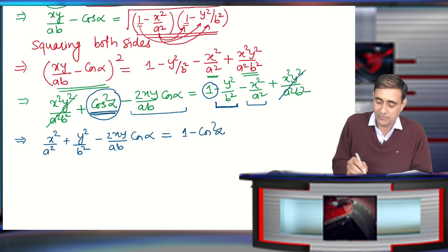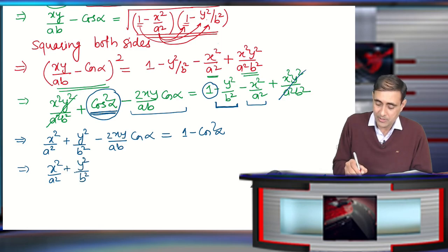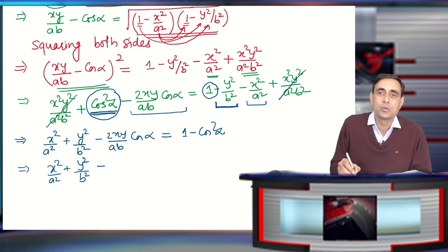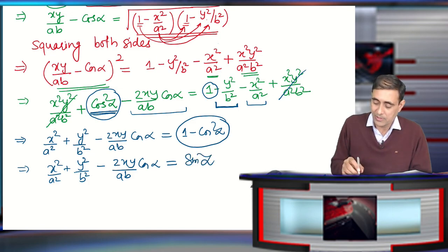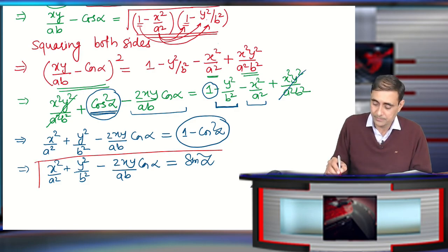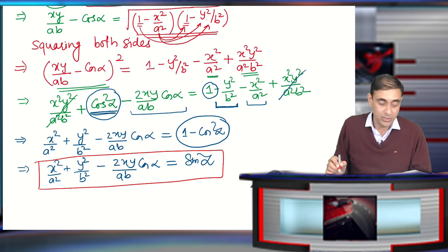So the left side becomes: x²/a² + y²/b² − 2xy/ab·cosα, and the right side becomes 1 − cos²α = sin²α. This is exactly what we needed to prove. This is quite an important question — please practice it carefully once.